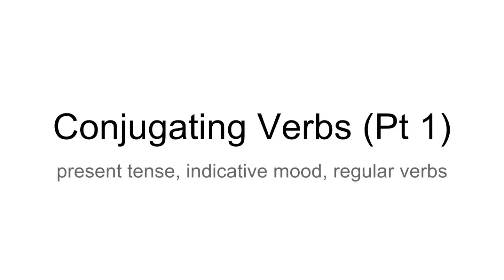The mood is the indicative mood, as opposed to, for example, the imperative mood, where you're commanding someone to do something. Indicative mood just means that you're indicating something that's happening. These are regular verbs, as opposed to irregular verbs, which don't quite follow the same patterns. The majority of verbs in Spanish are regular verbs, which means they get conjugated in a very clearly defined manner. Some of the most important verbs, however, are irregular, and we will talk about those in a different lesson.